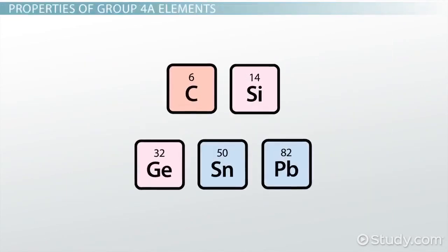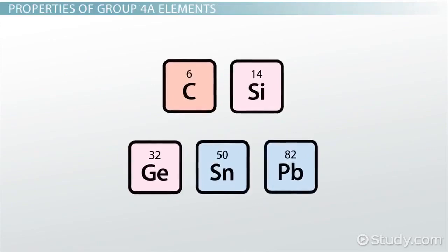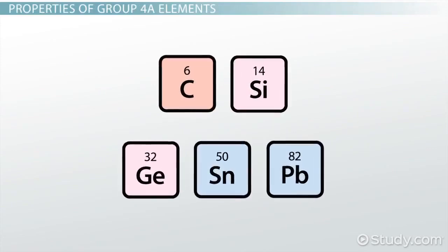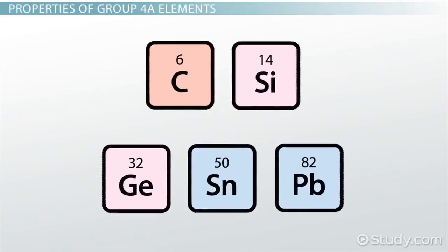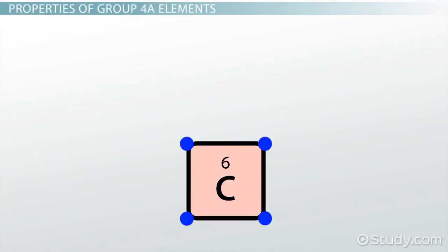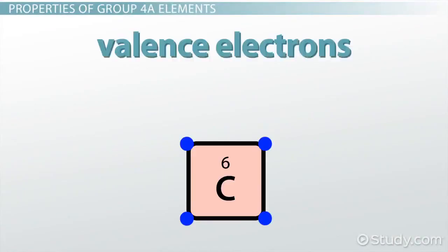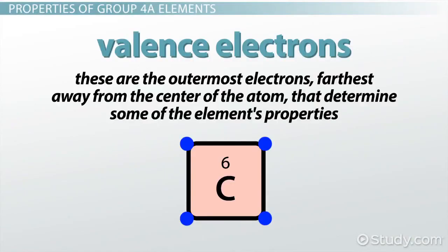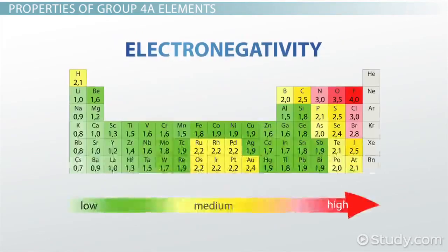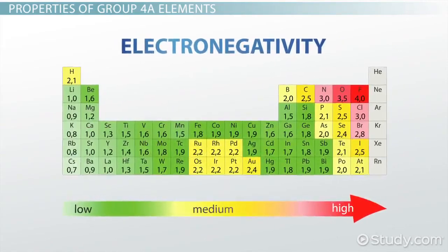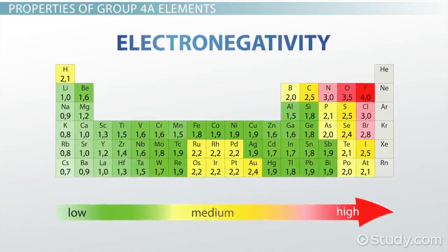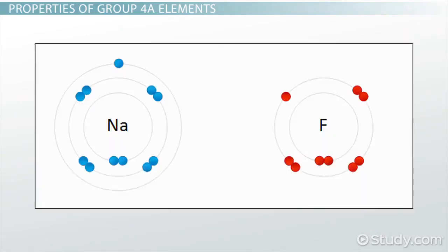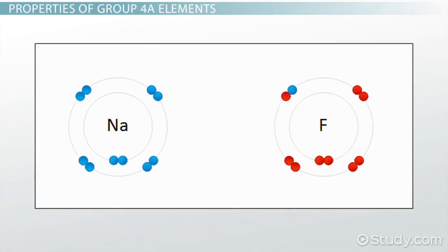Although you might not think carbon has a lot in common with tin, they're placed in the same group since they have similar properties. All elements in this group have 4 valence electrons. These are the outermost electrons, farthest away from the center of the atom, that determine some of the element's properties. They also typically have low electronegativities, which means they don't want another element's electrons. There are some groups of elements that really want to take electrons from other elements, but not group 4A.